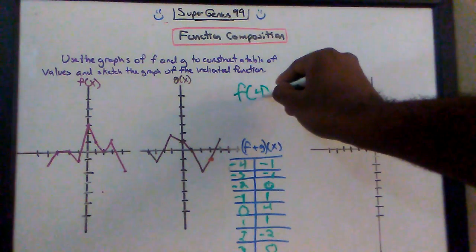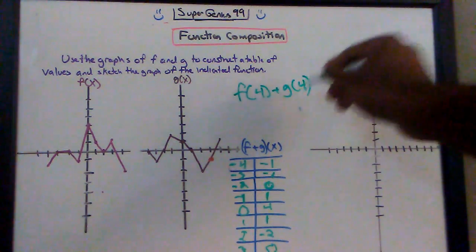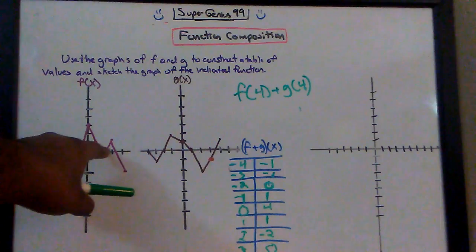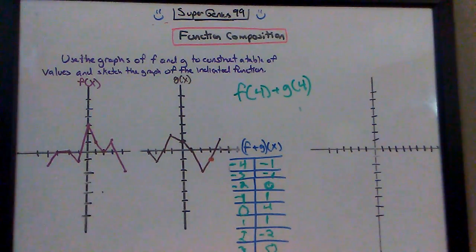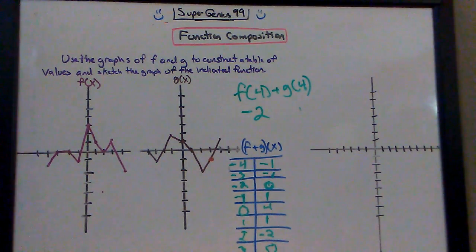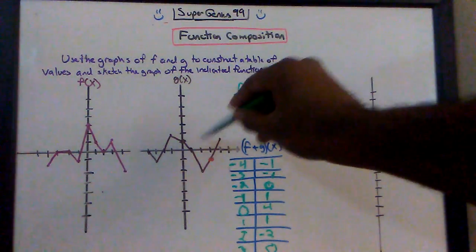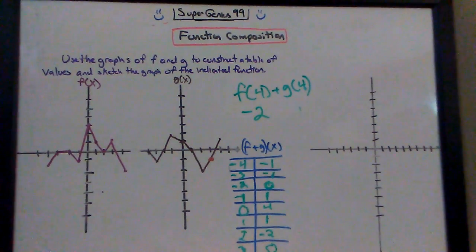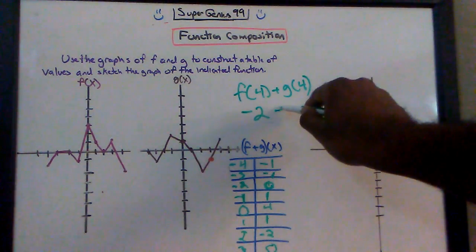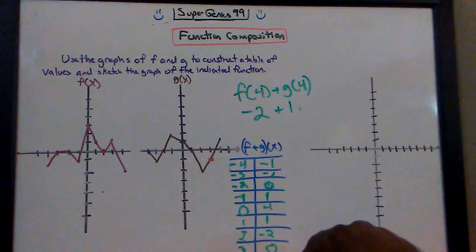f of 4 plus g of 4. What is the corresponding y value when x is 4 on the f function? x is 4 and y is negative 2. What is the corresponding y value when x is 4 on the g function? x is 4 and y is 1. So negative 2 plus 1 is negative 1.